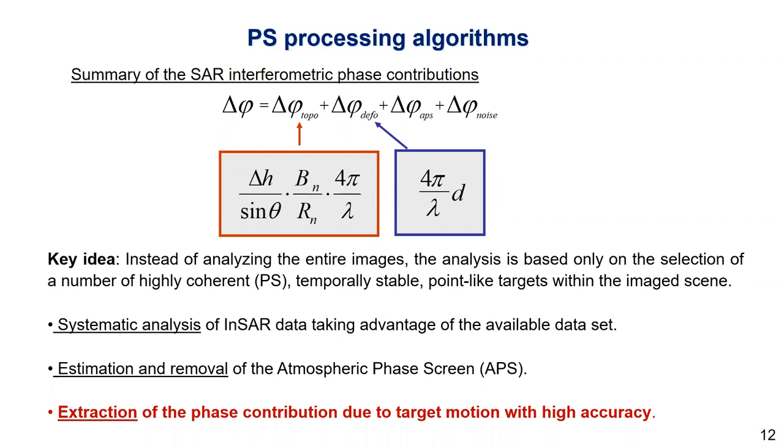By working on the PS subset data, we can systematically analyze SAR data, taking advantage of all available datasets, so we don't lose anything. We can do the estimation and removal of the atmospheric phase screen with high accuracy. We can extract the phase contribution due to the target motion with high accuracy.